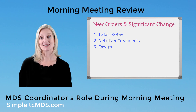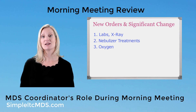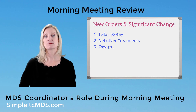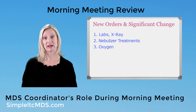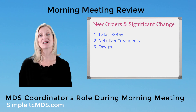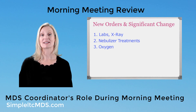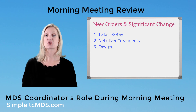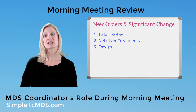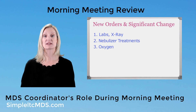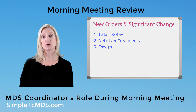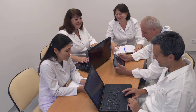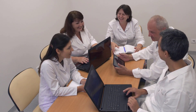If there's been a change in resident condition, you're probably going to hear new orders for labs, x-rays, maybe nebulizer treatments, or oxygen. Those might be residents who require a significant change assessment, and you may need to review their chart more closely after morning meeting. Make sure you're keeping a list of items to follow up on. You'll come prepared with your materials and keep notes of things that need follow-up after the meeting is completed.